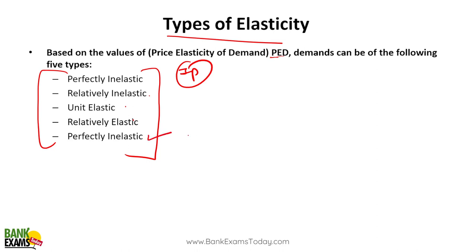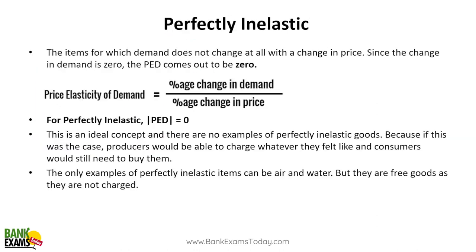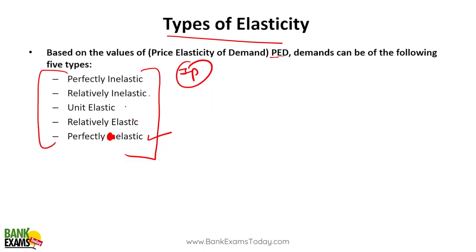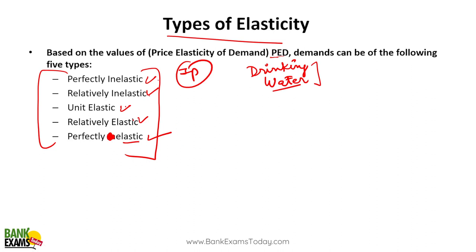Perfectly inelastic means no matter how much the price changes, there won't be any change in demand. For example, you buy drinking water to survive — no matter what the price of drinking water, you have to buy it. So the demand for water is perfectly inelastic. It's very difficult to find a product which has perfectly inelastic or perfectly elastic demand; most of the time it is relatively inelastic or relatively elastic.